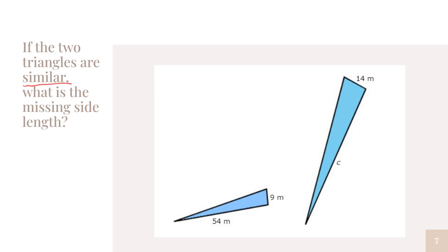Another example: the two triangles are similar. What is the missing side length? My missing side length is angle C. I match up my angles. Nine goes with 14, which means 54 would go with C. If I do 14 divided by 9, you would get 1.5 repeated. Nine times 1.5 repeated gives me 14.